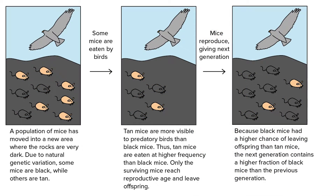A good example of this is if two kinds of mice have different fur coats — one black coat and one tan coat — and they both live on ground with dark rocks. It is easier for the black mice to blend into the environment to escape predators than the tan mice. Because of this difference, the tan mice are easily seen by hawks and other large birds that like to eat mice, and they aren't able to survive or reproduce and pass on the tan coat color to their offspring.